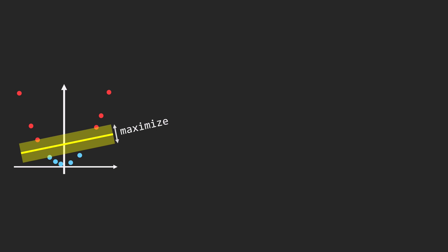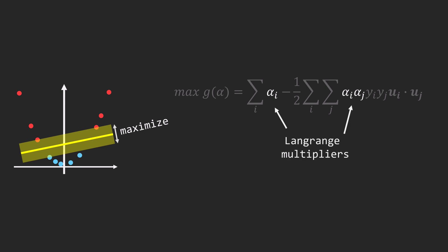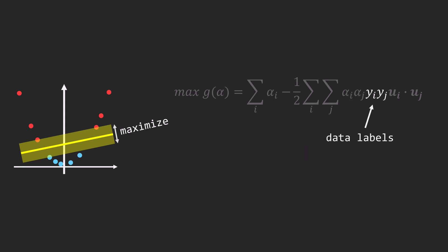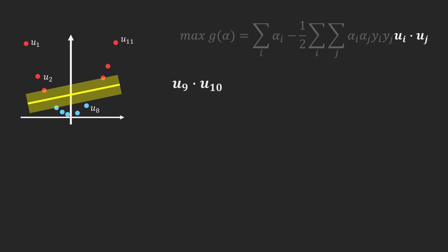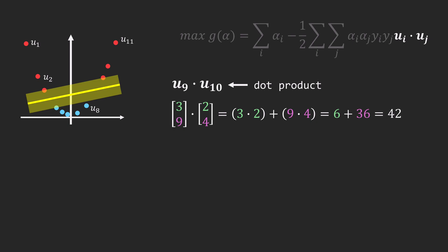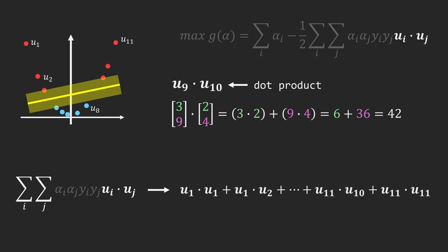To find the widest possible margin, the SVM algorithm maximizes a dual function. This function includes the Lagrange multipliers – the values we optimize to determine the position of the optimal hyperplane – along with data labels, which are numerical, such as plus one for red and minus one for blue, and the data samples themselves. The multiplication of data sample pairs in SVM is called the dot product, which involves multiplying corresponding features and summing these products. With many features, this computation can become intensive, especially compared to the multiplication of Lagrange multipliers and data labels, which are just simple scalar values. The double sigma notation over indices i and j means we compute the dot product for all possible pairs of data samples, leading to a large number of operations as the number of features and samples increases.